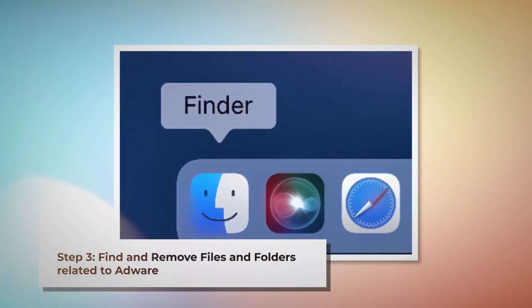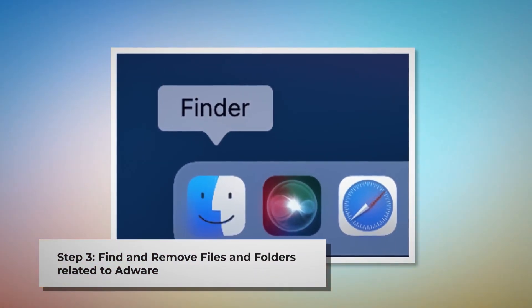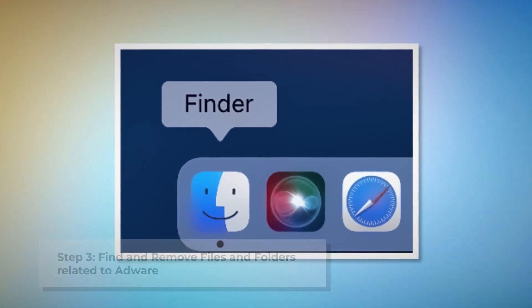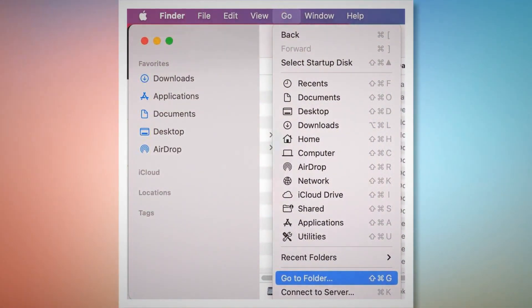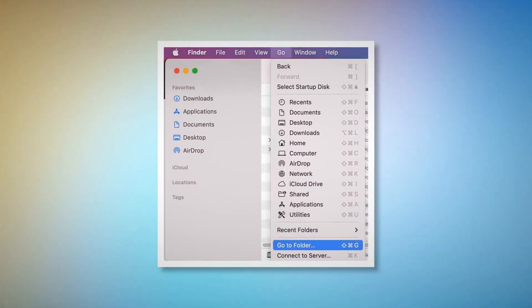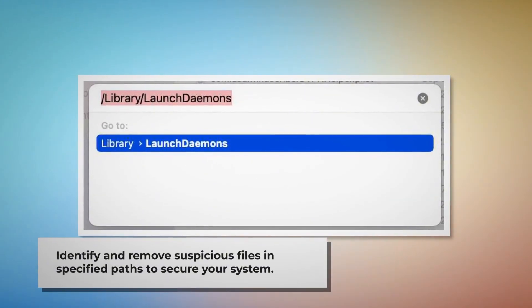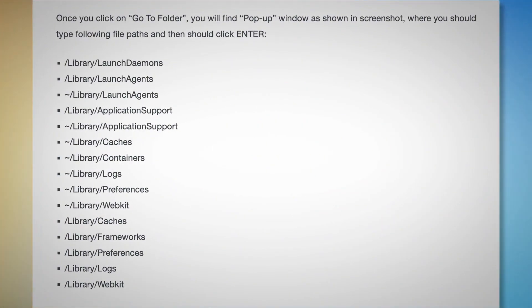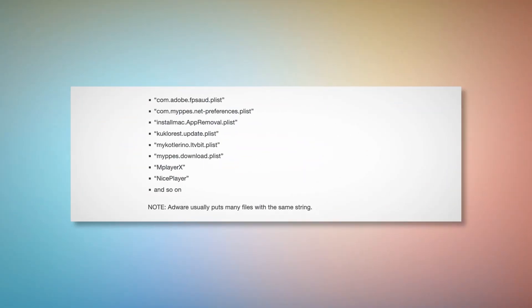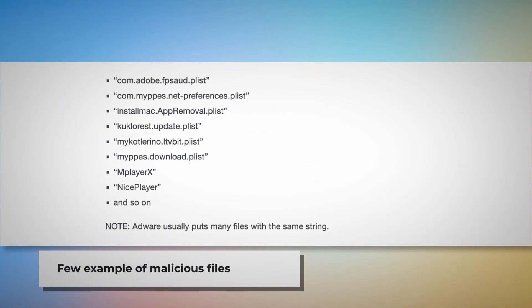Step three: find and remove files and folders related to adware. Make sure you are in the Finder window. Click on Go at the top menu bar of your Mac, then click Go to Folder on the drop-down menu. A pop-up window will appear where you should type these file paths and press Enter: /Library/LaunchDaemons, /Library/LaunchAgents, /Library/Application Support, and so on. Look for suspicious or malicious files and move them to Trash. Note: adware usually puts many files with the same string.